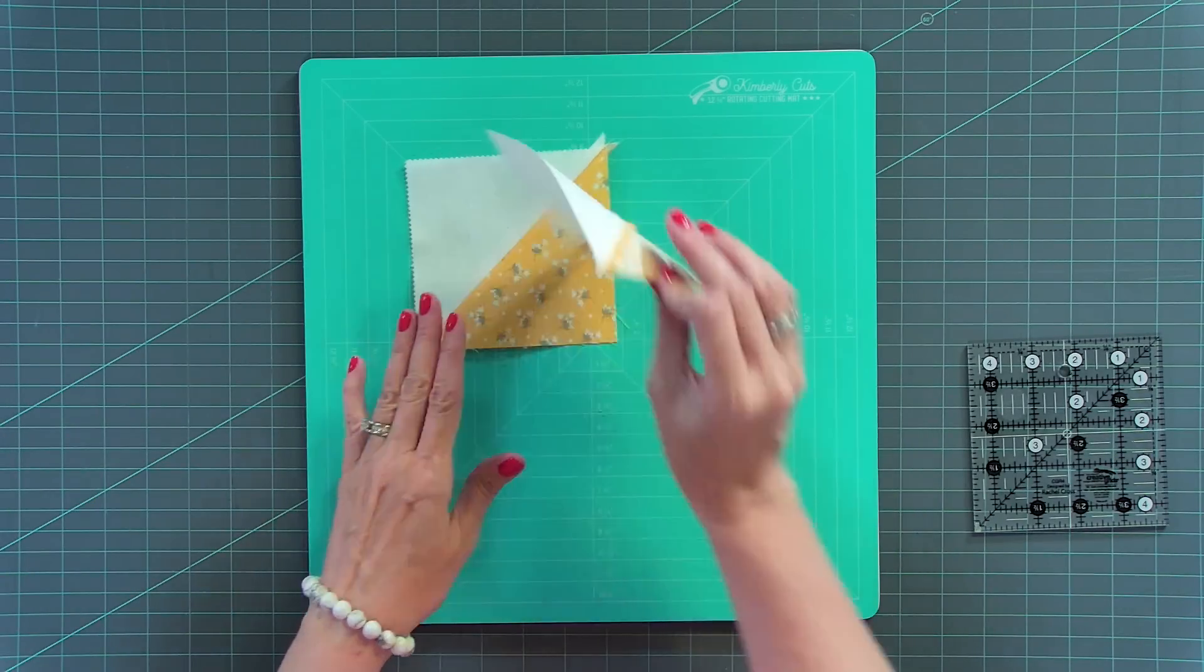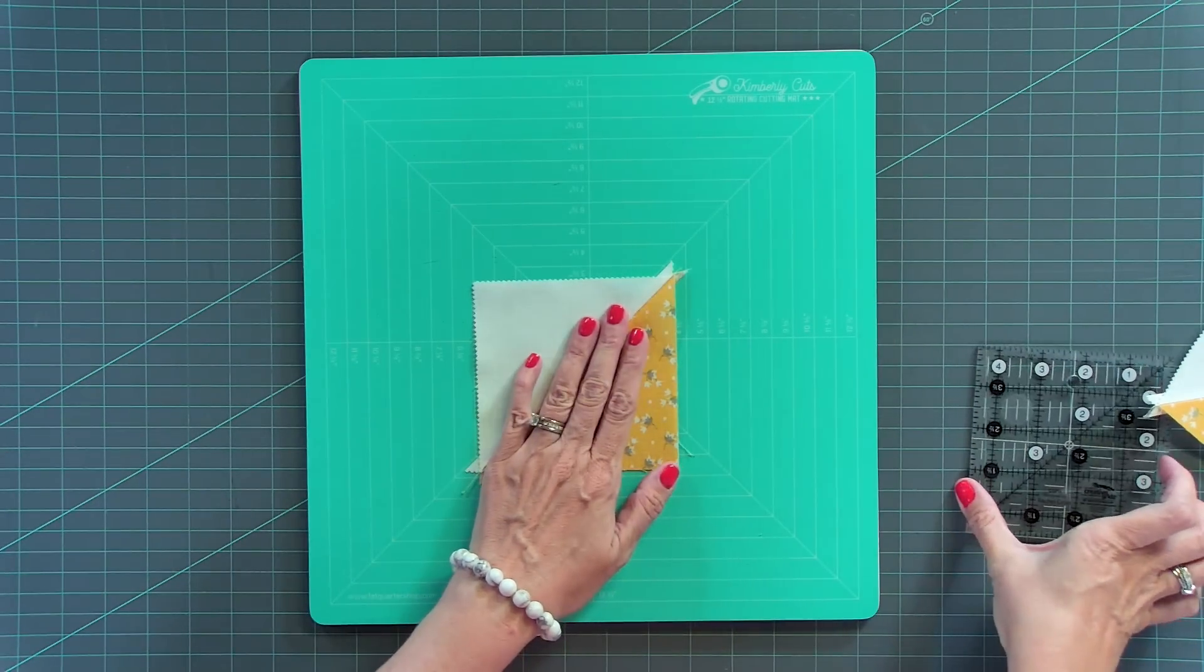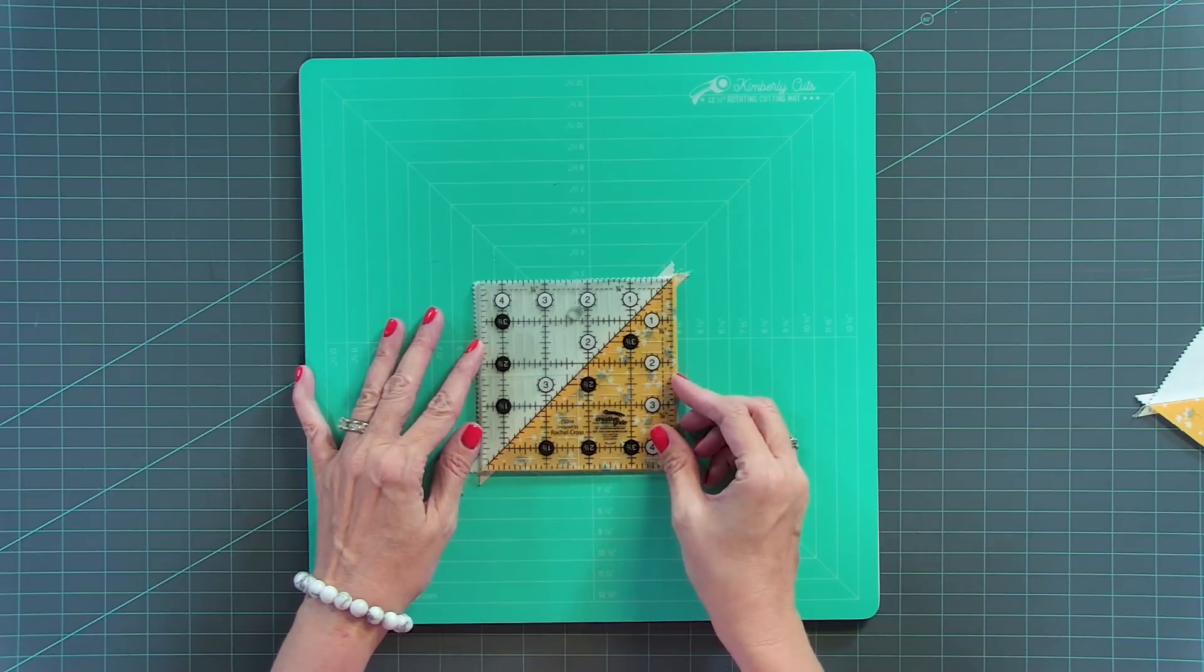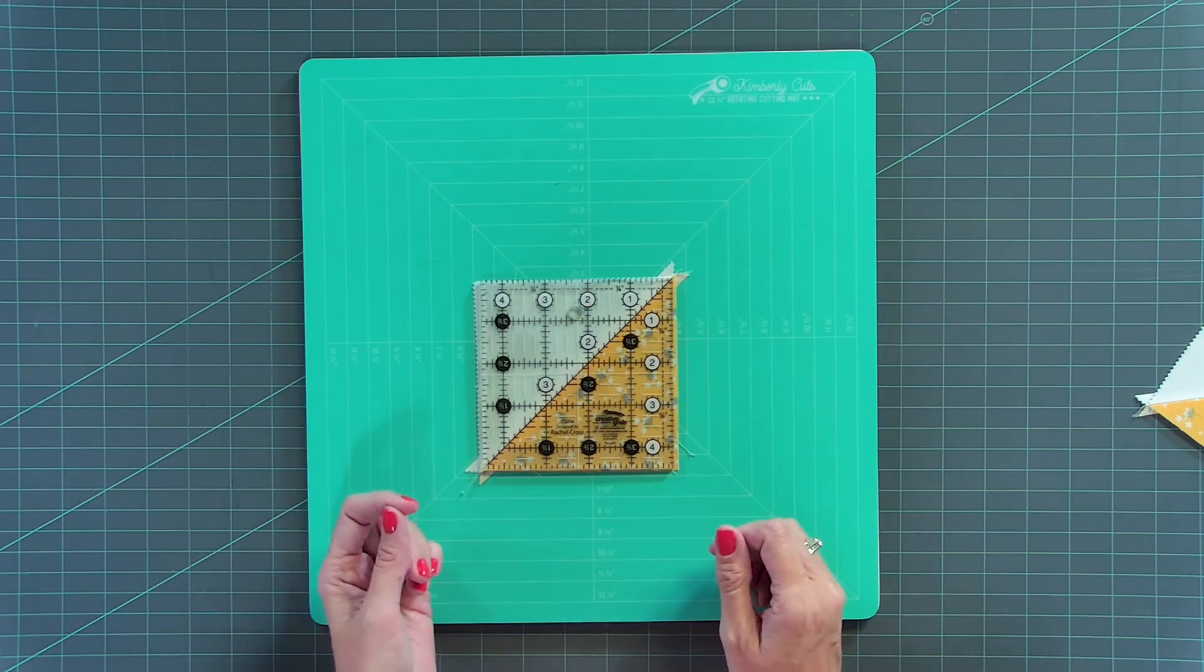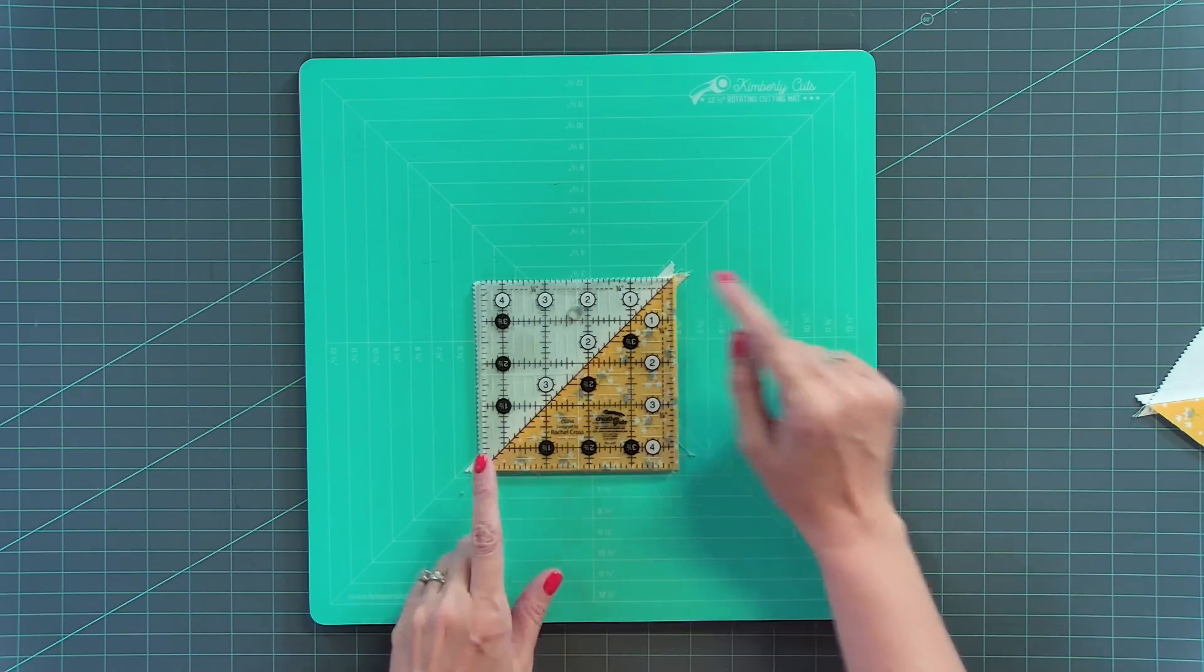So from here, once everything is nice and flat, you're going to trim all of your half square triangles to four and a half inches. And so what I'm gonna do is just use a Creative Grids four and a half inch ruler, put that diagonal line right on that seam. I'm gonna cut two sides, rotate.